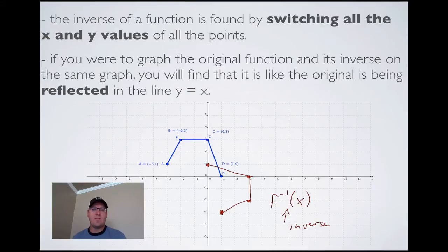The second important point: the original is being reflected in the line y equals x. The line y equals x goes through (1, 1), (0, 0), (2, 2), (3, 3). You can see that the blue function is reflected in this green line, and that's what makes the red function. That's why it's being reflected in the line y equals x.